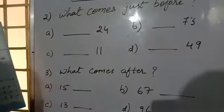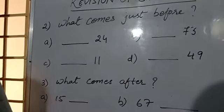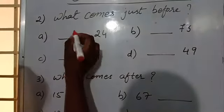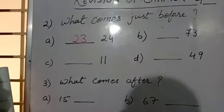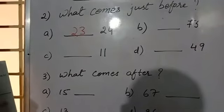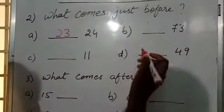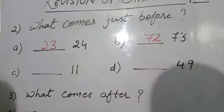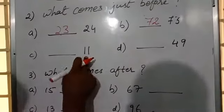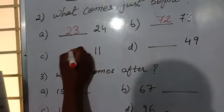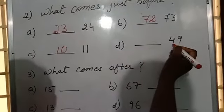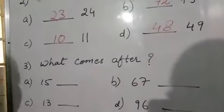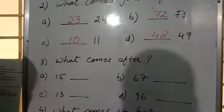Now we will do the next exercise: what comes just before? Number A: which number will come before 24? We write 23. 23 will come before 24. Now, the next one is 73. Before 73, which number will come? 72. Next one is 11. Before 11, which number will come? 10. Next one: 49. Which number will come before 49? 48. Like that, you have to do all the questions.